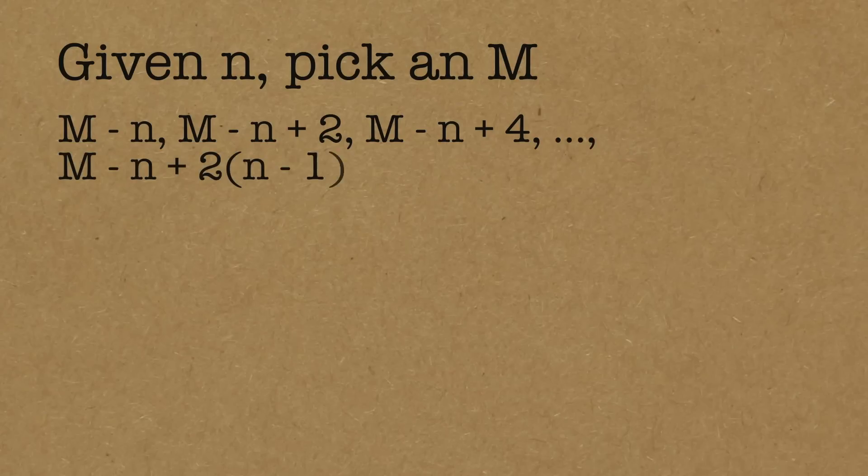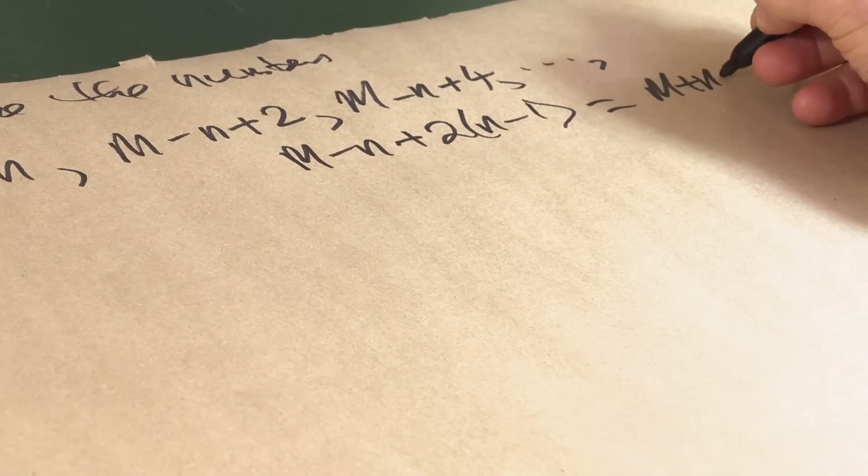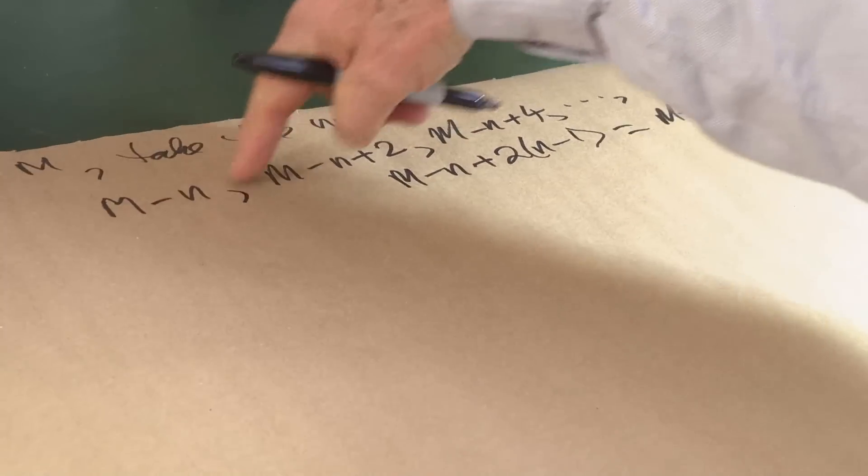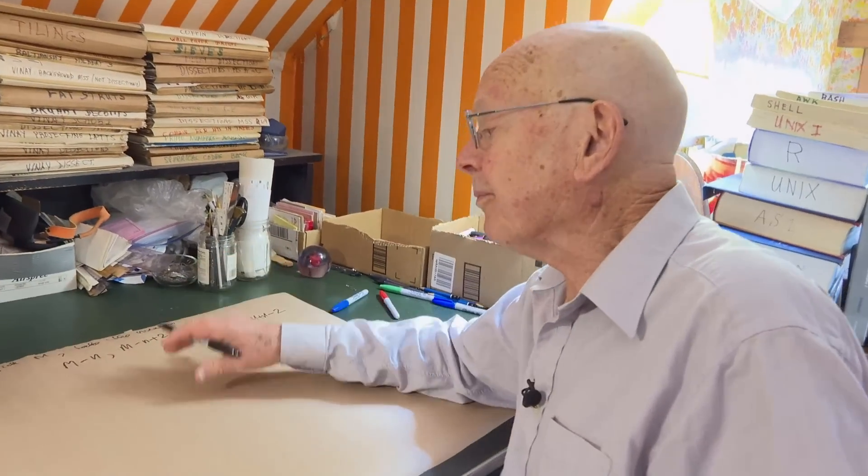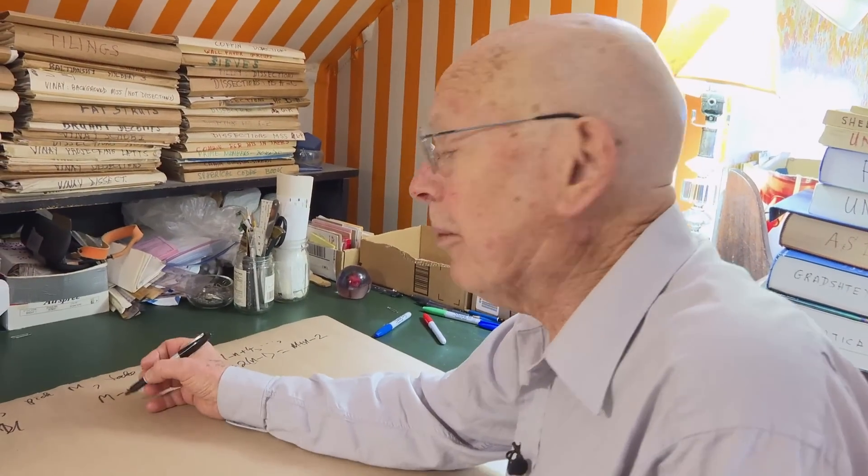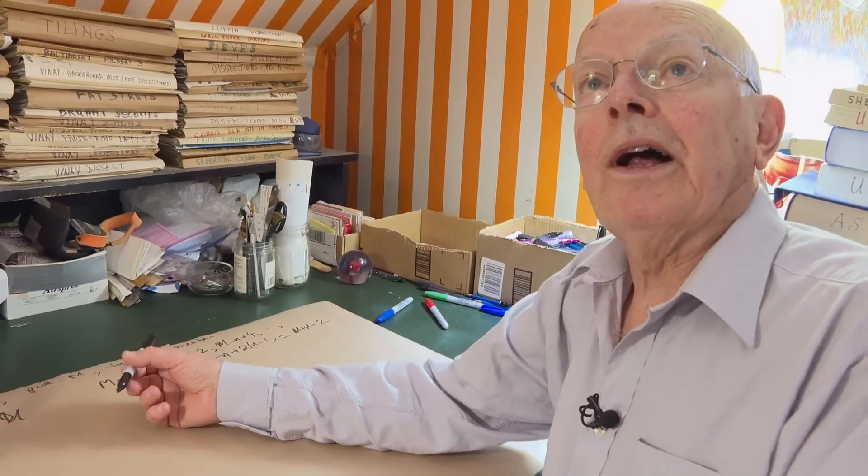So the last number is going to be m minus n plus twice n minus 1. In other words, m plus n minus 2. So we go from m minus n up to m plus n minus 2 in steps of 2. And if you do that and you pick m to be about square root of n, you do pretty well.